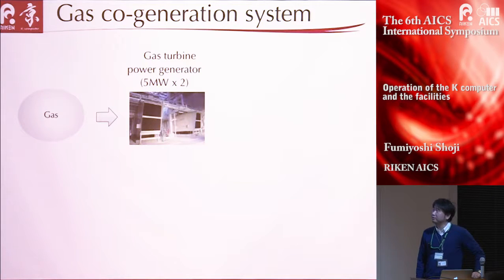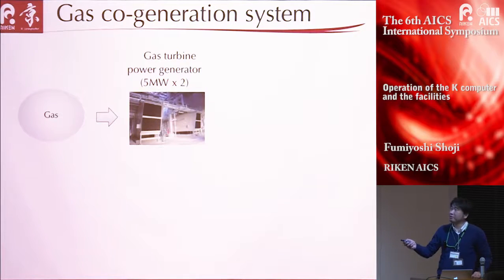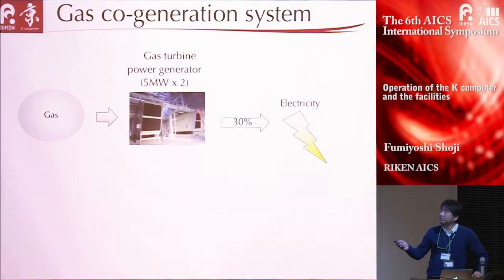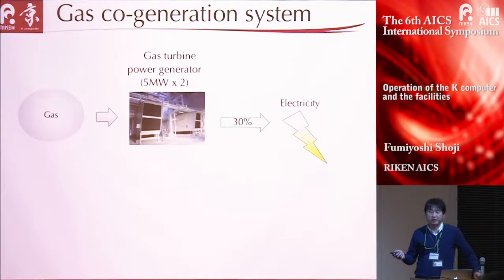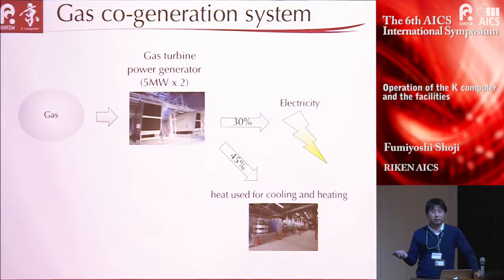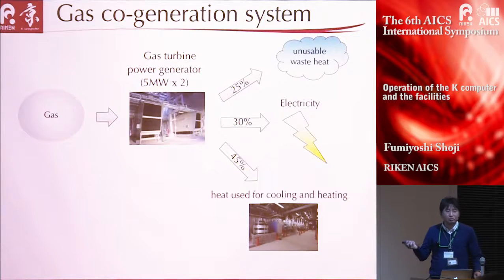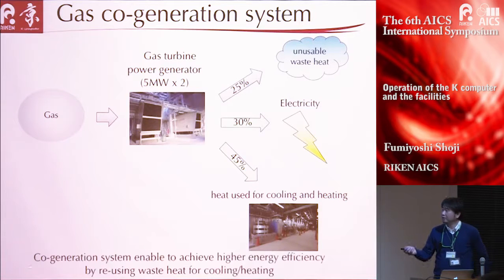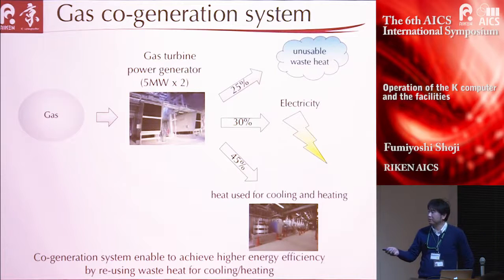This is a brief introduction of the gas cogeneration system. We have two gas turbine power generators. The generators produce electricity, but only 30% of the potential energy of gas can be converted to electricity. However, 45% of the energy can be used for cooling and heating by this system. The remaining energy becomes unusable wasted heat. This system achieves higher energy efficiency by reusing wasted heat for cooling and heating.